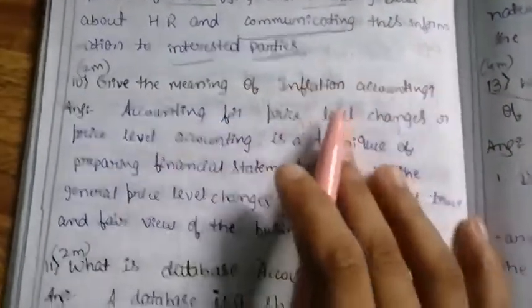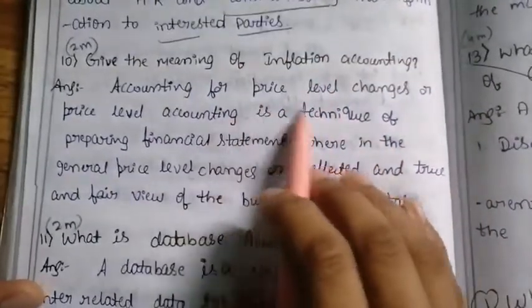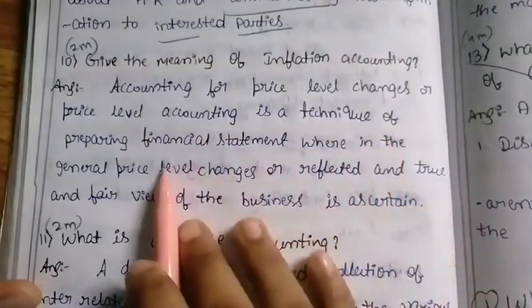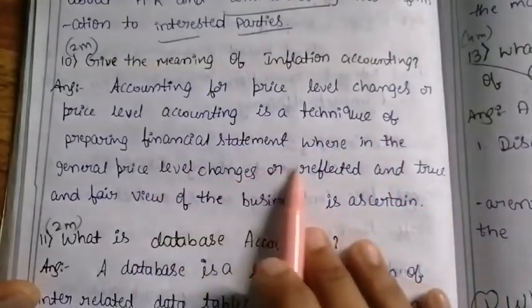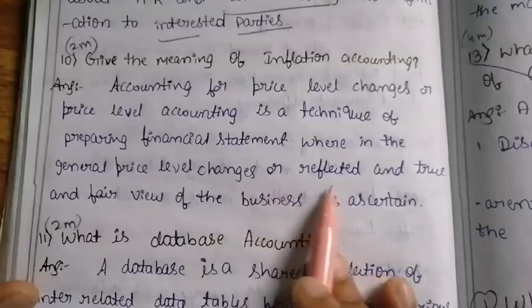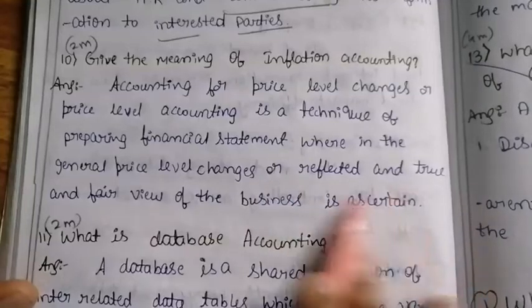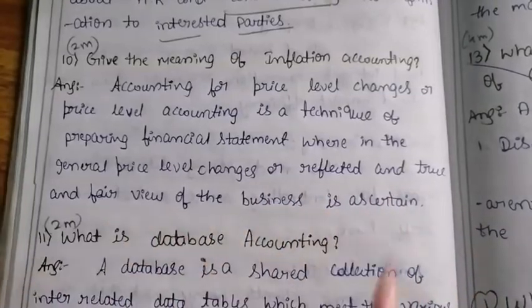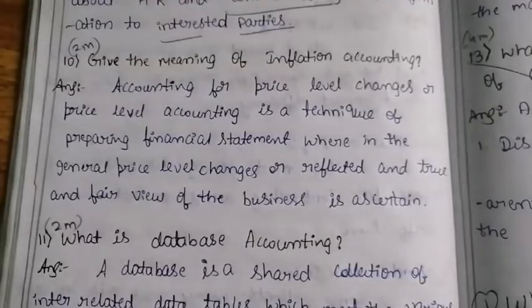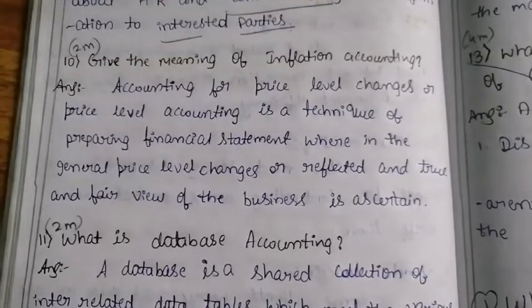Give the meaning of inflation accounting. Accounting for price level changes, or price level accounting, is the technique of preparing financial statements wherein the general price level changes are reflected, giving a true and fair view of the business.